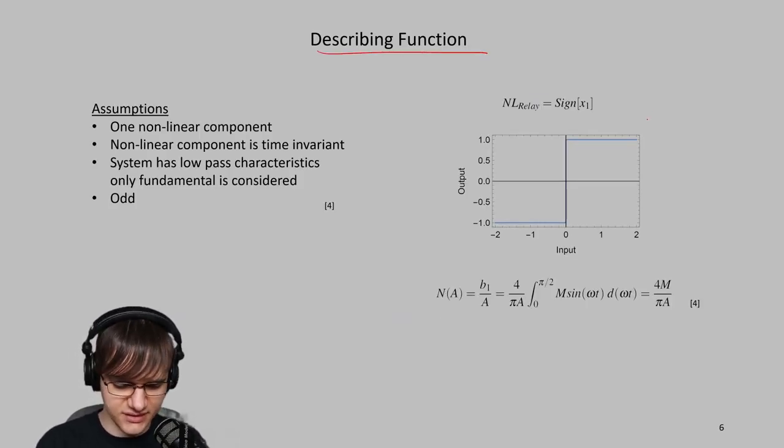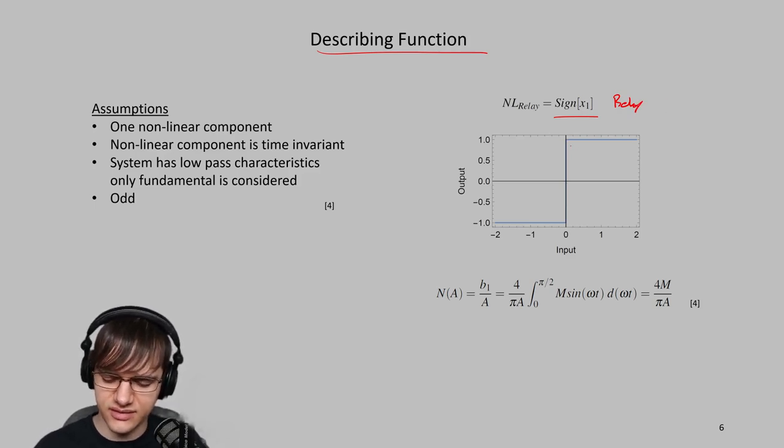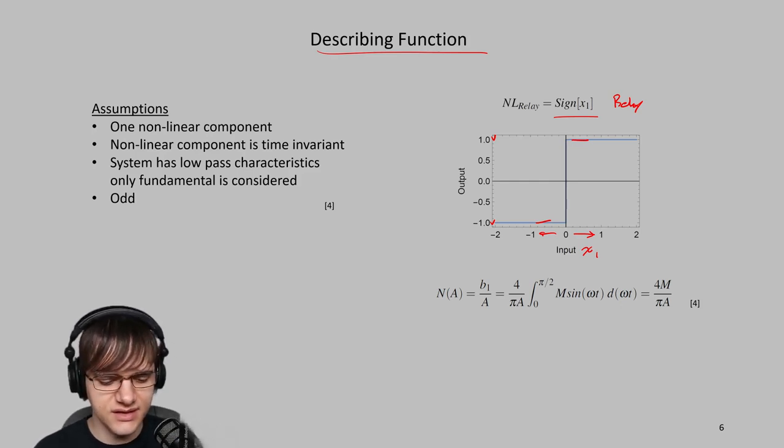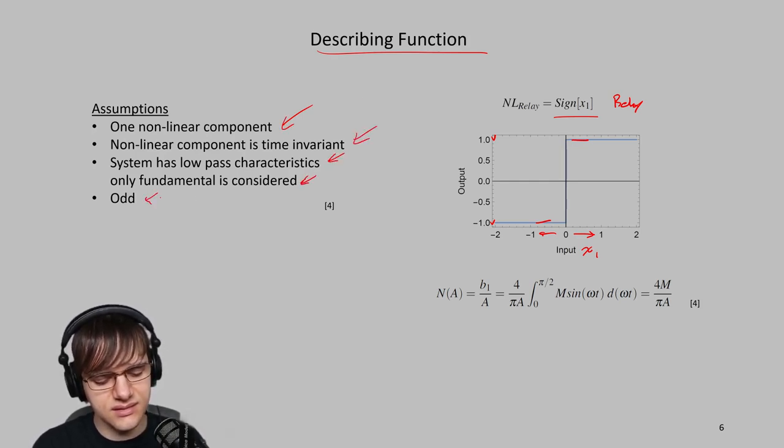Now into describing function analysis. For my nonlinear control, I've used a relay, a simple relay with no hysteresis. And the input is the current, which is x1. If the current is positive, it's going to output 1 volt, if the current is negative, it's going to be negative 1 volt. So this is a positive feedback system, which is different than what was in the book. For the assumptions, it meets all assumptions.